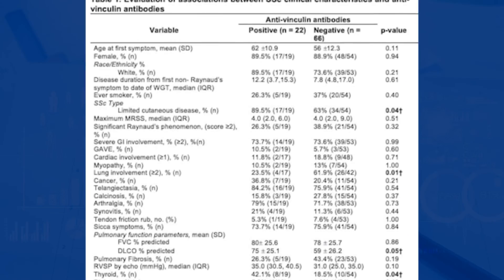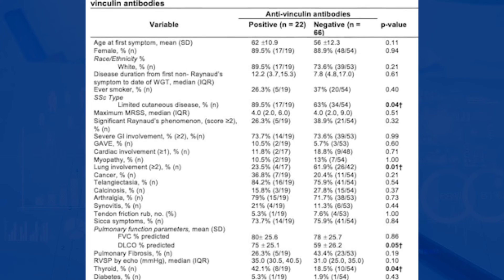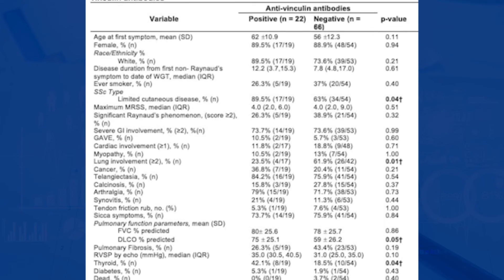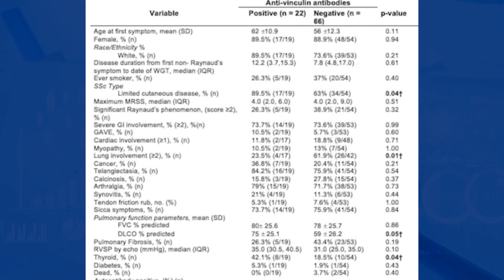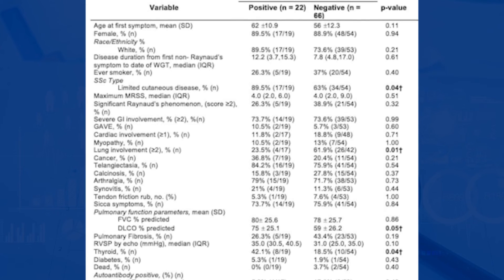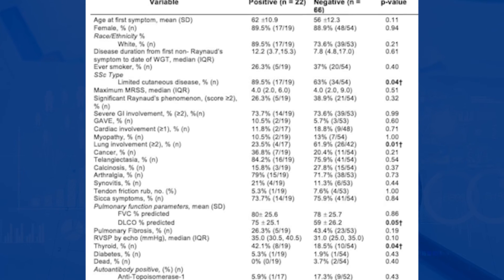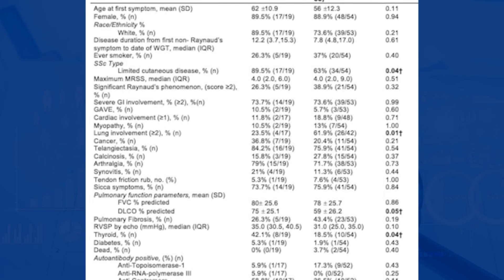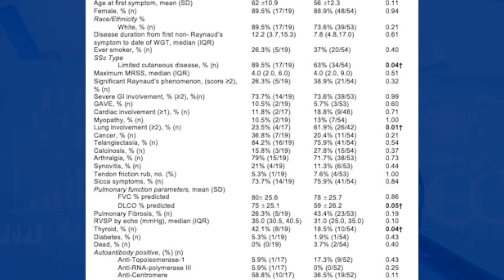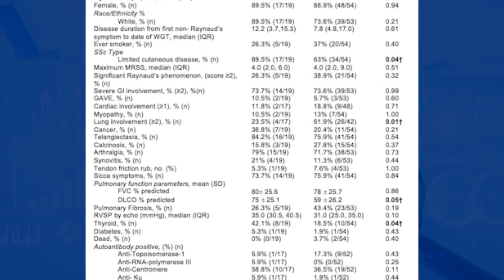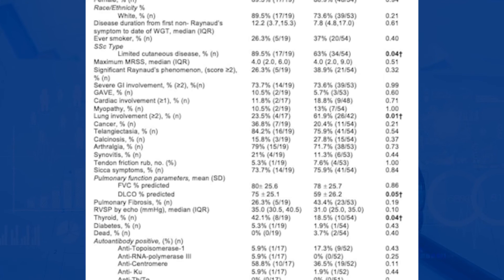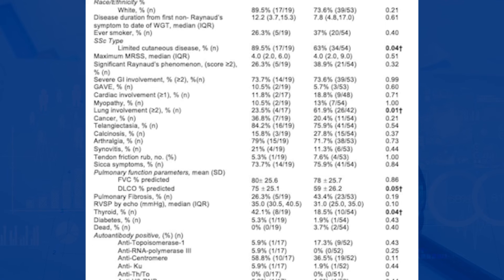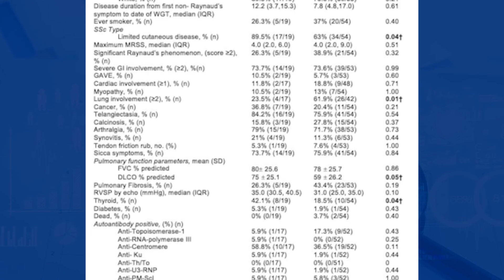As you can see in our results in our poster, 25% of our cohort had antivinculin antibodies. Patients with antivinculin antibodies were more likely to have limited scleroderma, thyroid disease, and a higher or better DLCO on pulmonary function testing.